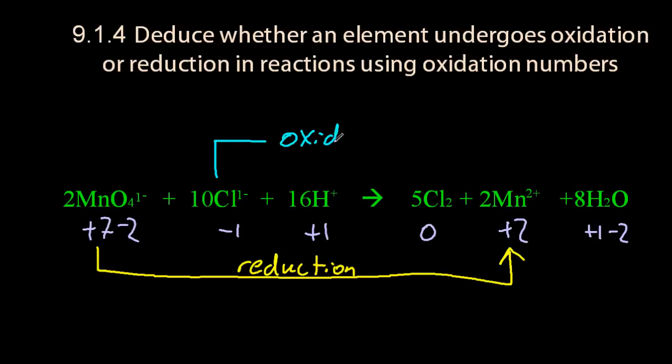Which one has gone up? Well, chloride has turned to chlorine, and so the oxidation number's increased. Oxidation is loss of electrons. So chloride has undergone oxidation.